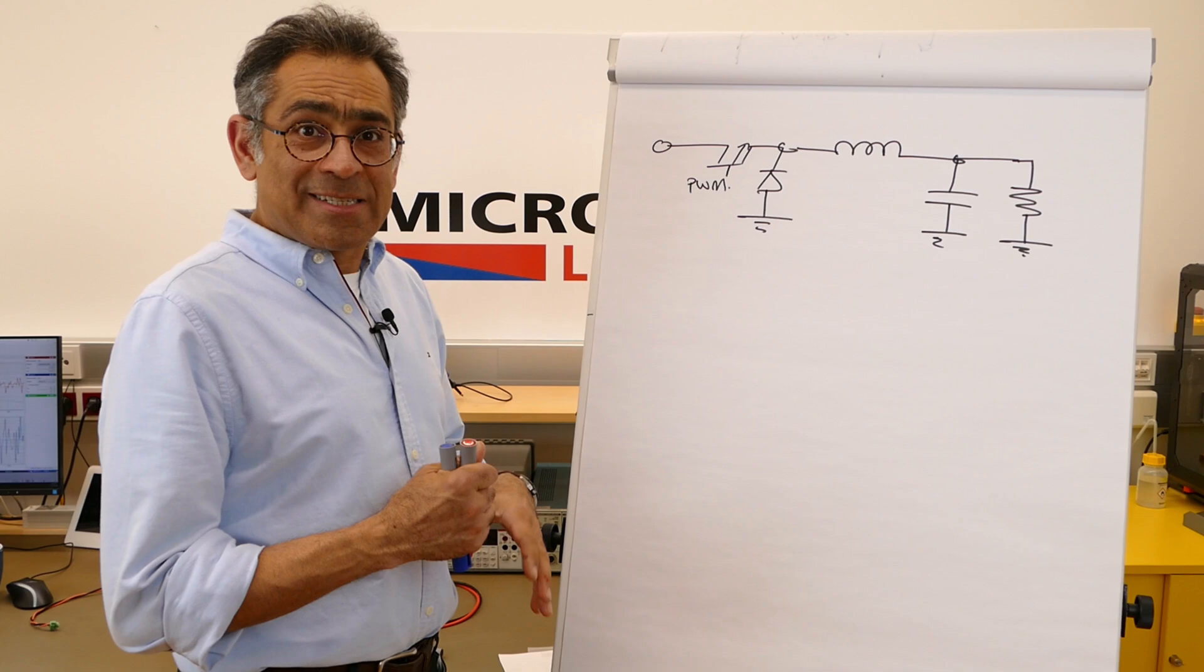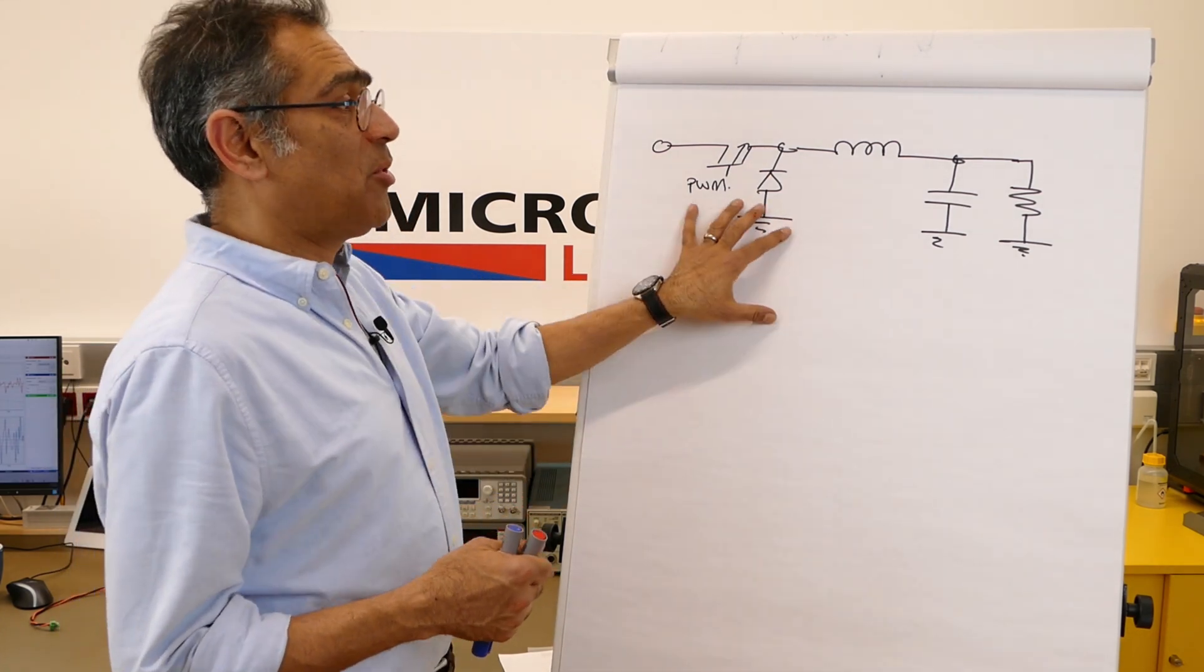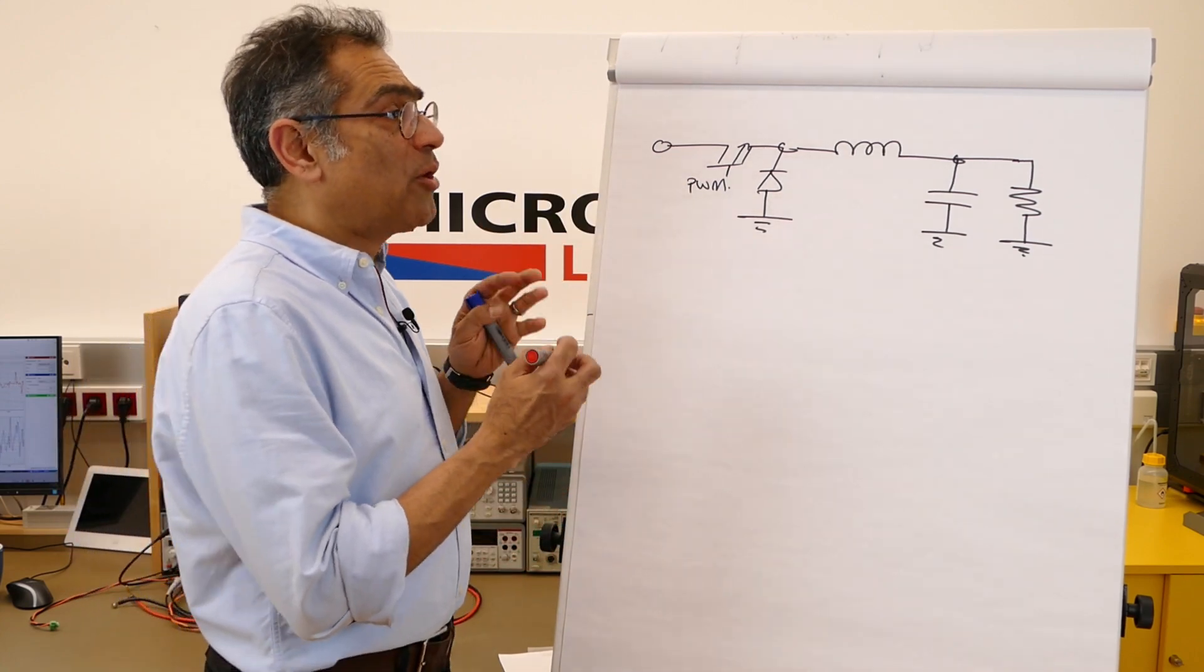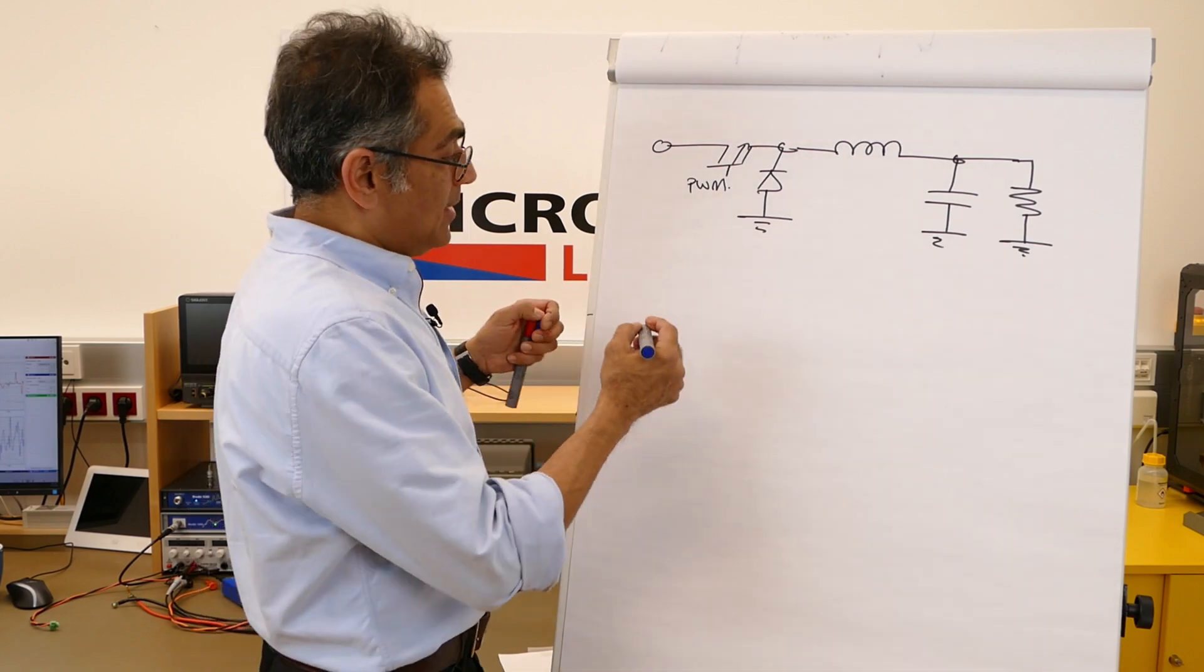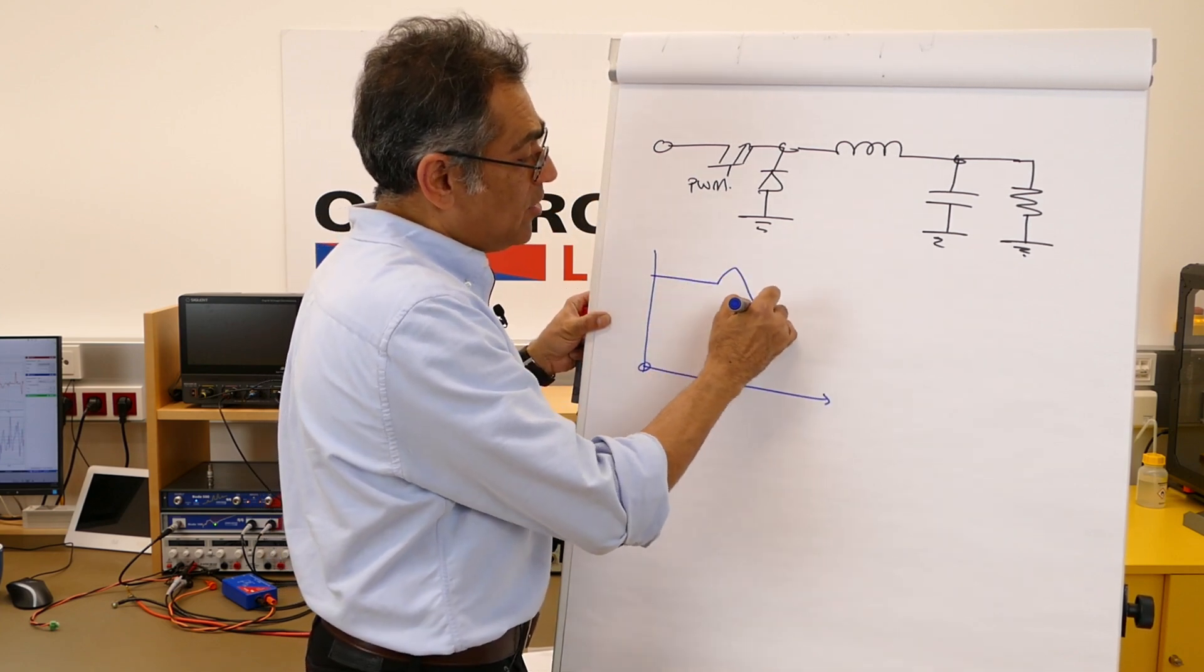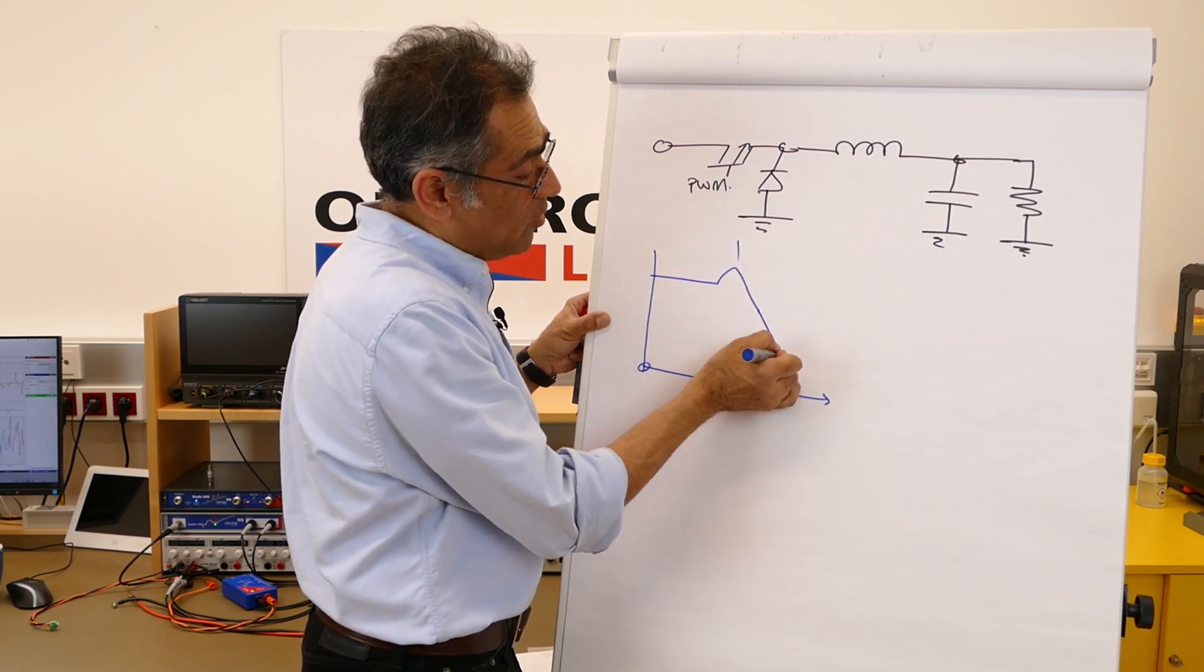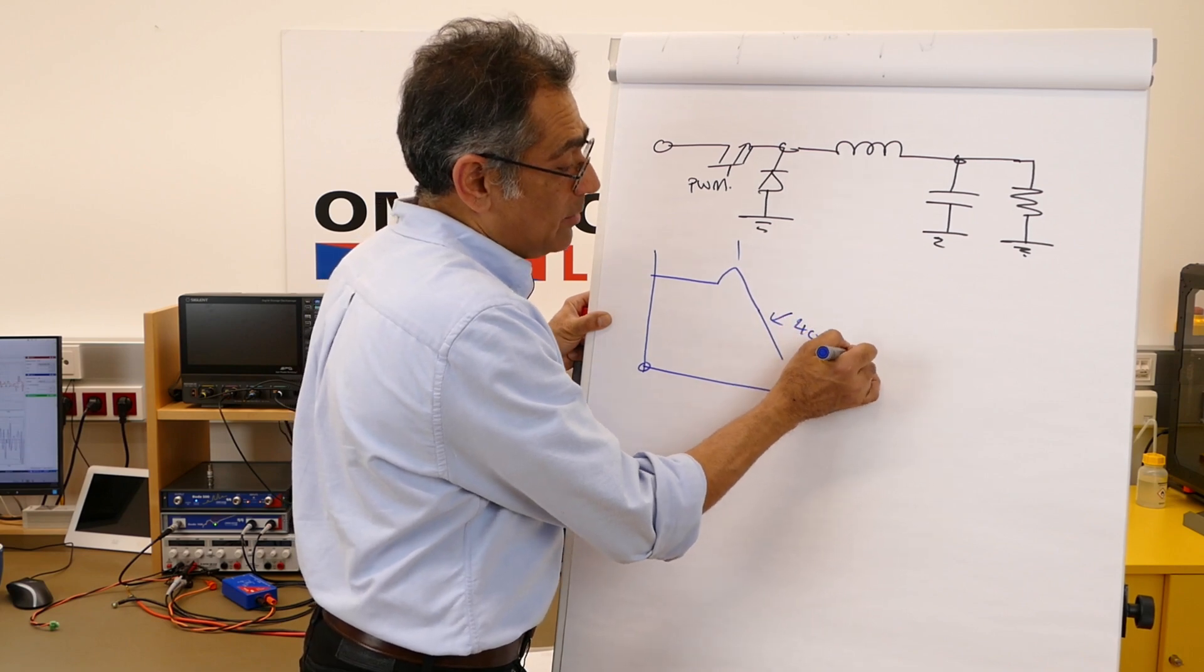For simplicity let's consider a case of a buck converter. I have drawn the topology here and let's see what happens in voltage mode. If you look at the plant frequency response, you'll see that you have some PWM gain, then you have a resonant pole and then a double pole, and then it starts rolling off at a rate of 40 dB per decade.